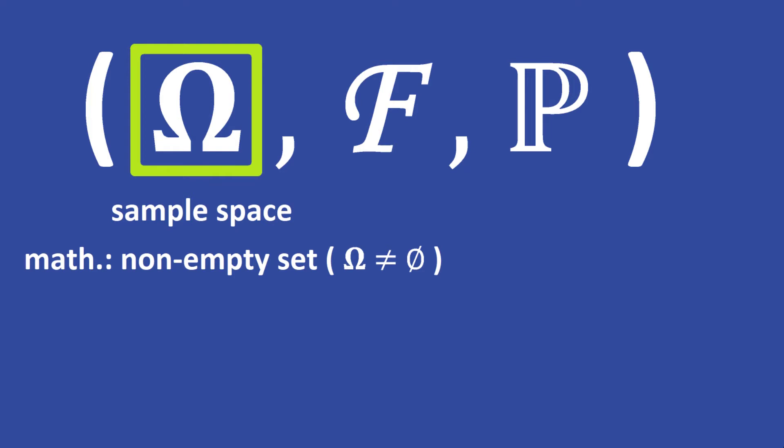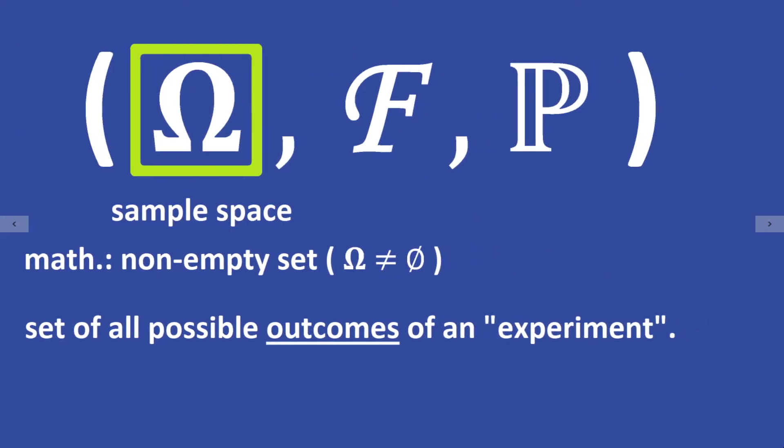The so-called sample space Omega, which is an arbitrary non-empty set. It is the set of all possible outcomes of a random process or experiment.